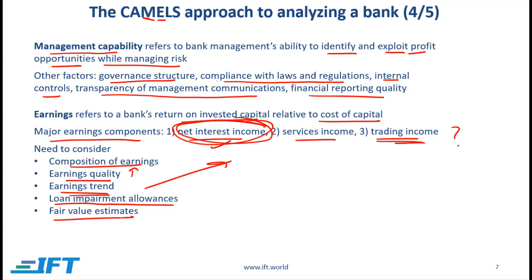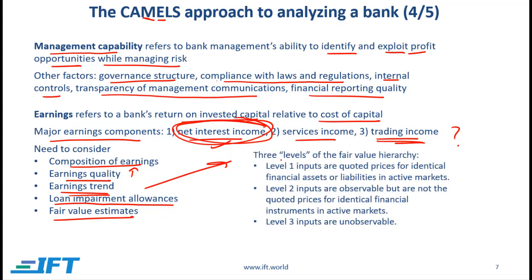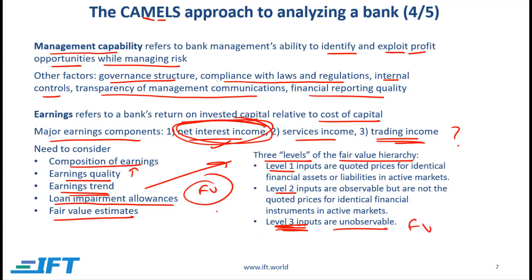We also need to be concerned with fair value estimates, recognizing the three levels of the fair value hierarchy. When an asset is shown at fair value, it may be level one, two, or three. With level one there is essentially no subjectivity; with level three there is substantial subjectivity because the inputs are unobservable, so we are basically estimating fair value. Our job as an analyst is to determine how well a bank is estimating fair value. If a bank's estimate is higher than what we believe it should be, that would be a cause for concern because it implies potential impairments in the future with a negative impact on earnings.